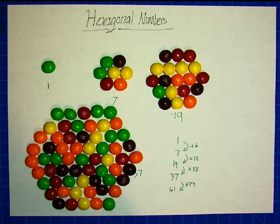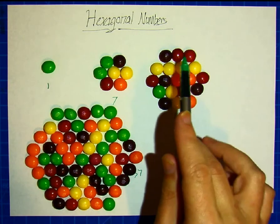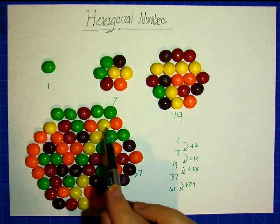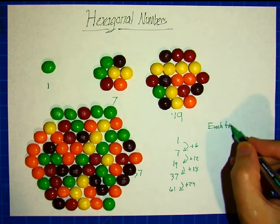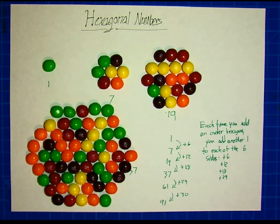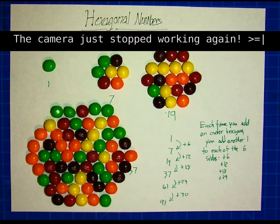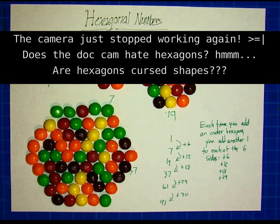If you notice this outer row, each time you need to add one in each direction. At first you have three across, then four across, then five across. So every one of the six sides, you add one. Each time you add an outer hexagon, you add another one to each of the six sides. So plus 6, plus 12, plus 18, plus 24, and then plus 30 would give you a total of 91 candies needed to make this even bigger.